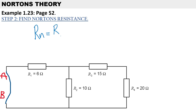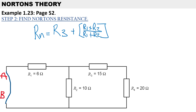We now have R3 in series, and R1 and R2 in parallel. The formula for that parallel branch is R1 times R2 over (R1 plus R2). The third resistor is 15 ohms, and we apply the product-sum rule because R1 and R2 are in parallel.